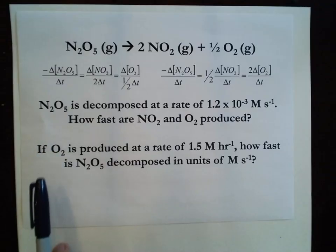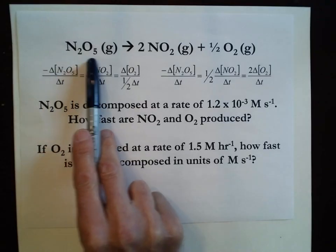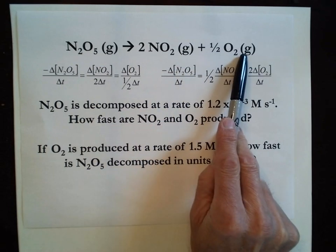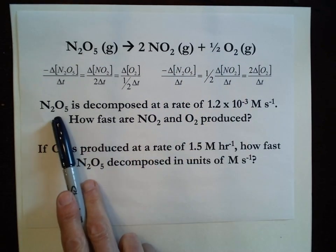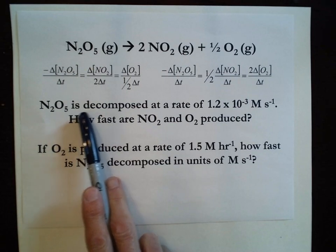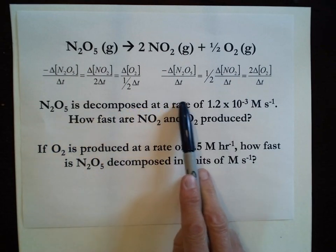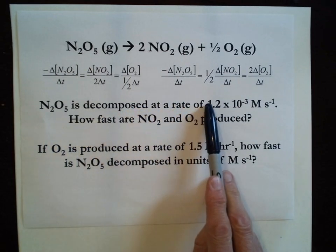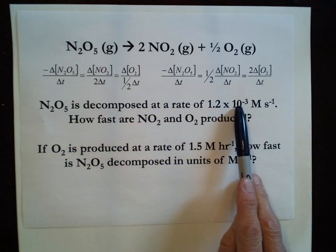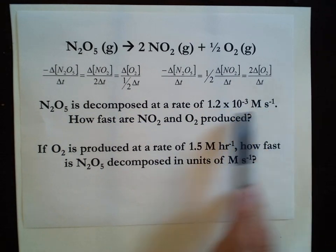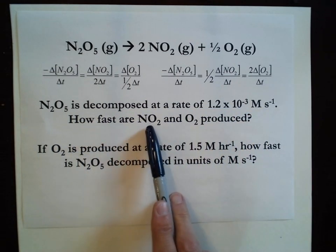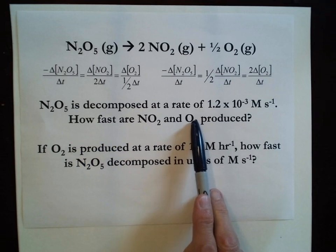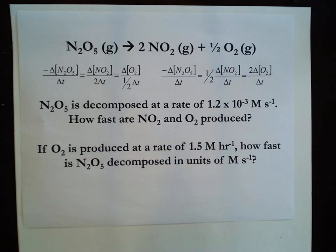Now let's try some practice problems. We're given a chemical equation where dinitrogen pentoxide decomposes at a rate of 1.2 × 10⁻³ molar per second. How fast are NO₂ and O₂ produced? Pause the video and give this a shot.